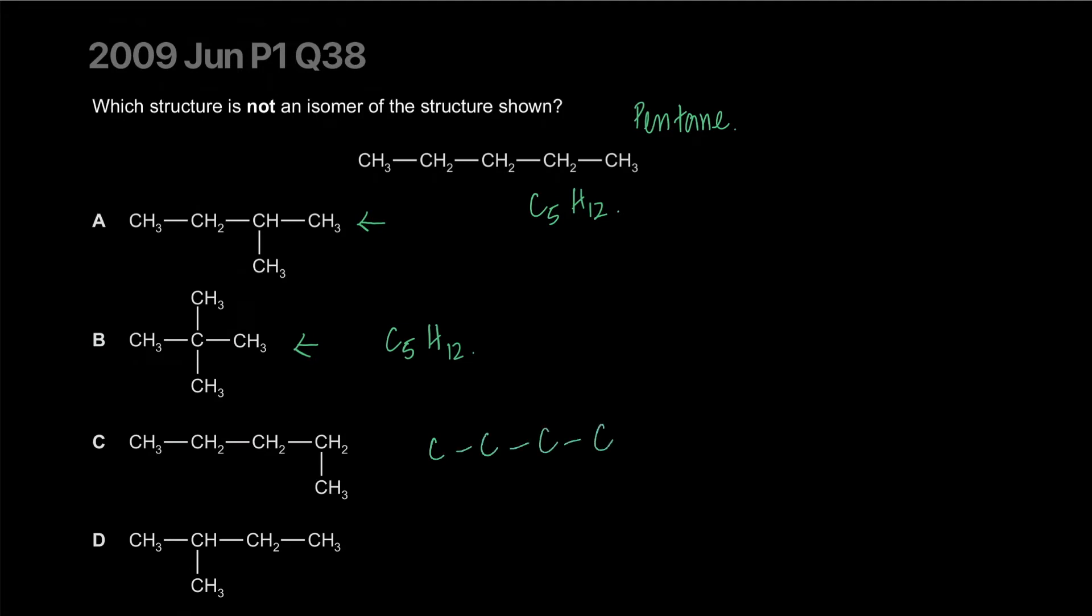It's the same molecule, just drawn differently. You can rearrange it however way you want. The trick is, if you have a pen, put it on one corner carbon and take it through. If you can connect all the carbons, it's a straight chain carbon. This is a straight chain carbon, this is also a straight chain carbon. So this is C5H12 pentane - they're completely identical. The last one is the same as A, actually, just mirrored about this axis. So if I flip this about this axis, this CH3 is going to come here and it's going to turn into A. So they're identical. C is our correct answer.